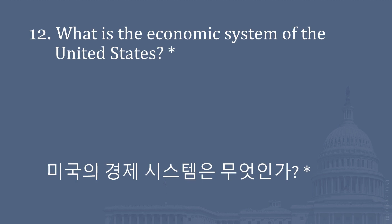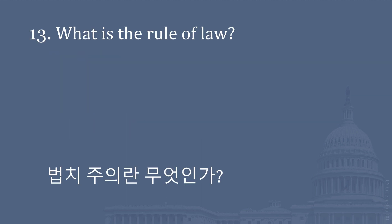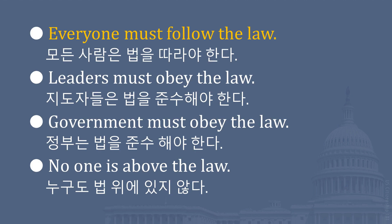What is the economic system of the United States? Capitalism. Free market economy. What is the rule of law? Everyone must follow the law. Leaders must obey the law. Government must obey the law. No one is above the law.